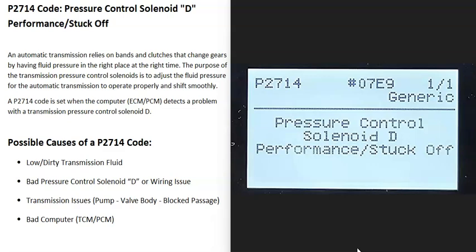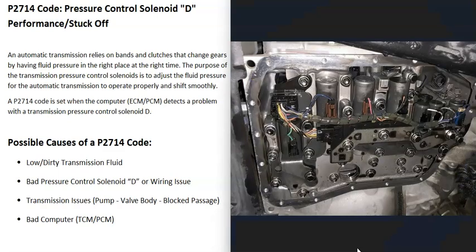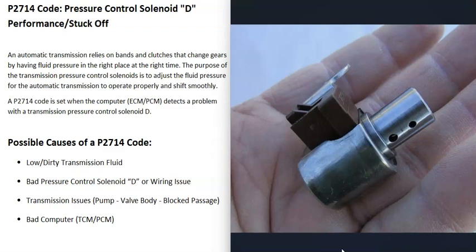Today I'm talking about the P2714 code — what it is and how you go about fixing it. A P2714 code is a pressure control solenoid D performance stuck off. Transmissions have a lot of solenoids built into them and work off of fluid pressure. These solenoids help control where the fluid is flowing, and the computer controls them, turning them on and off to control fluid pressure and allow the transmission to shift at the right times.